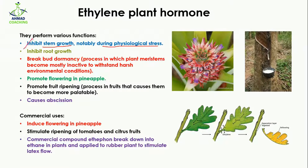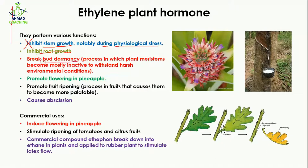During physiological stress — meaning there may be a lack of water or food — the plant is stressed, and in response to that stress, stem growth is stopped. Similarly, it also inhibits root growth. It also breaks bud dormancy.